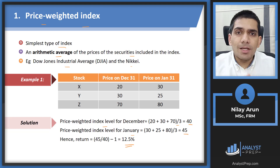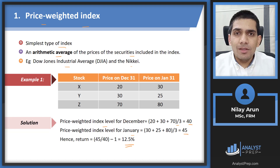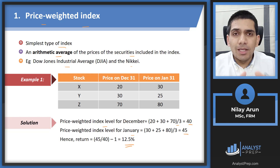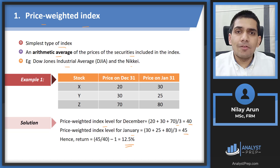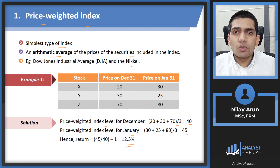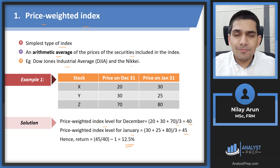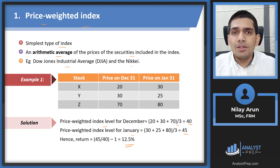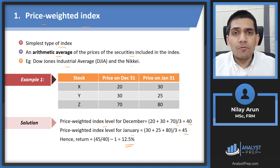The problem with this index, however, is that whenever there is a stock split or stock consolidation, you need to make sure the index level doesn't change artificially. For example, in a two-for-one stock split, the price would theoretically become half, which would impact the index. To handle this, we adjust the divisor — a simple adjustment, but one that has to be carried out every time there is a stock split or consolidation.